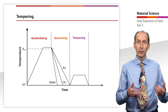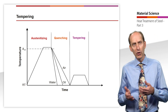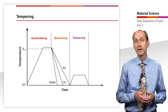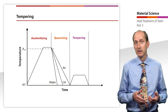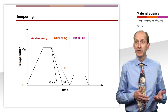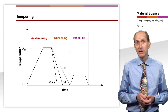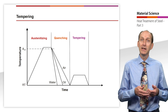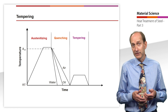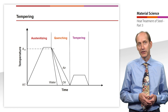After quenching, carbon atoms can diffuse to more favorable interstitial lattice sites by tempering. Thus, heating to low temperatures in the range of 180 to 250 degrees Celsius leads to an insignificant decrease in hardness, but a significant increase in toughness.